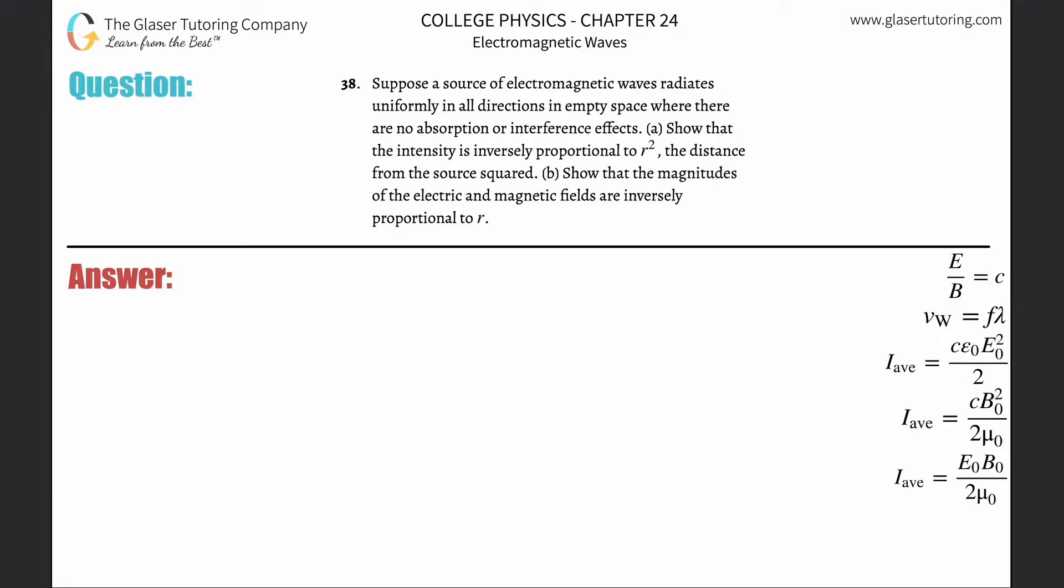Number 38. Suppose a source of electromagnetic arrays radiates uniformly in all directions in empty space. Show that the intensity is inversely proportional to r-squared, the distance from the source squared.